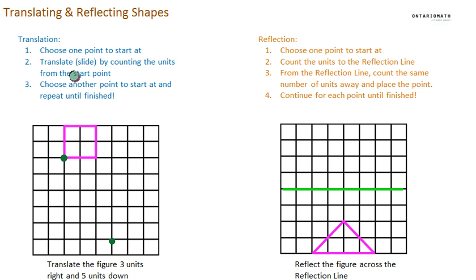I'm going to move on to this point. So I'm going to choose another point to start at and repeat until finished. I'm just going to move on to this one. Don't count it. So count the next one. One, two, three, five down. One, two, three, four, five.